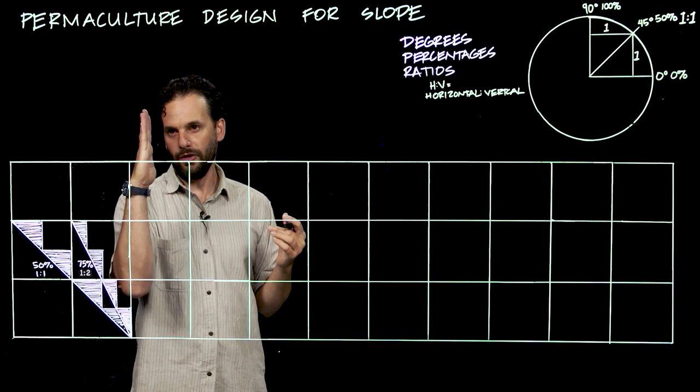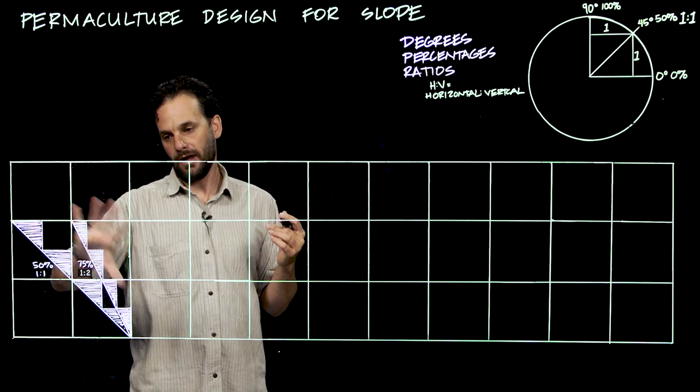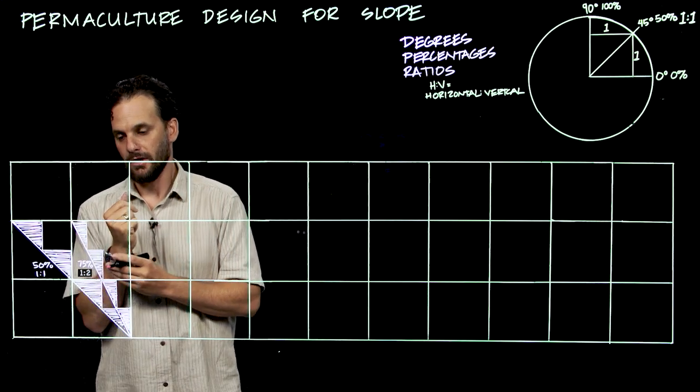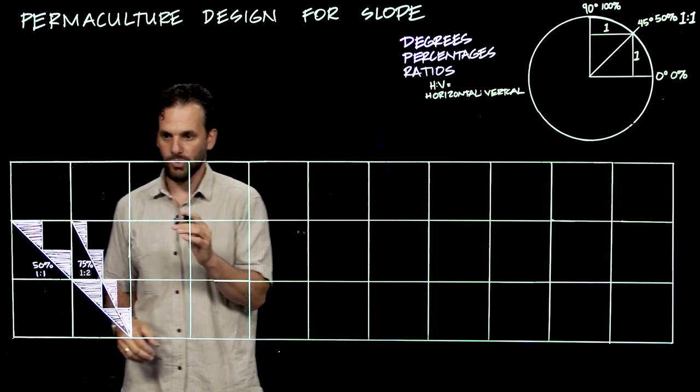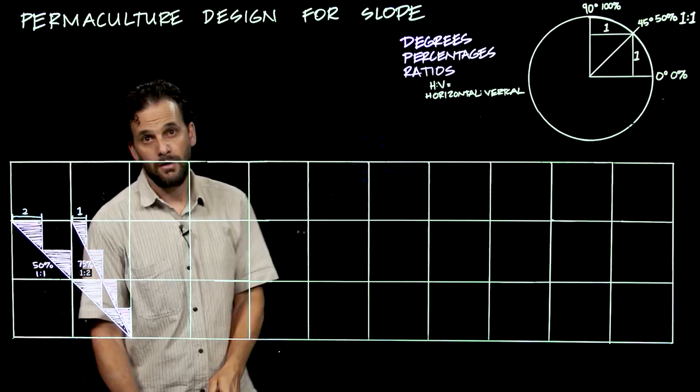Now, you wouldn't have a terrace wall that was completely vertical anyway. You'd have it on a slight slope, but I'm just drawing the geometry of it, not an actual construction document here.